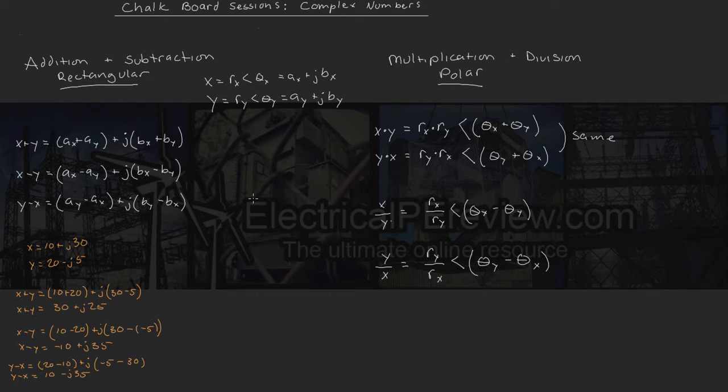All right, let's try some multiplication and division. Give me x times y, and we're only so far given our rectangular form. It looks something like this, 10 plus j30 times 20 minus j5. We know we can't really carry this out in rectangular, so the first thing's first. We need to convert each of these two vectors from rectangular to polar.